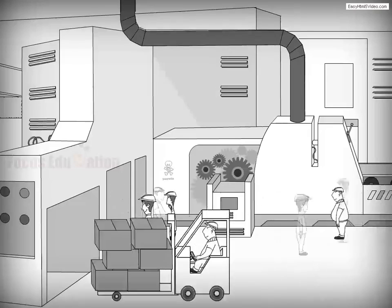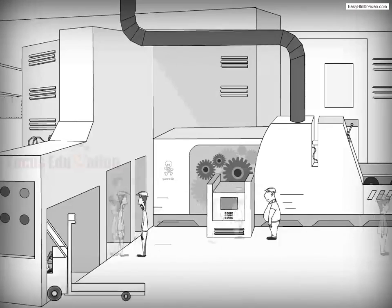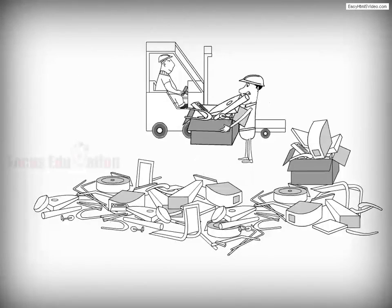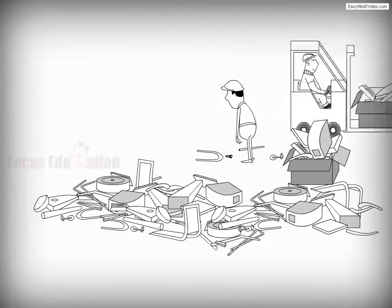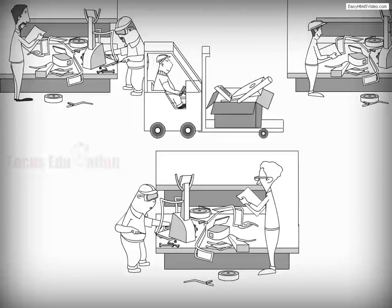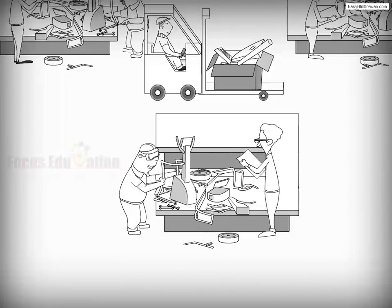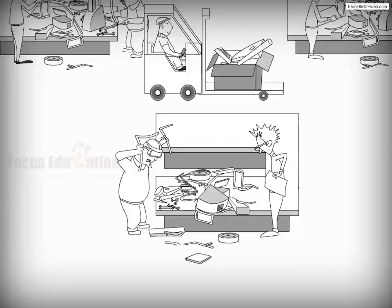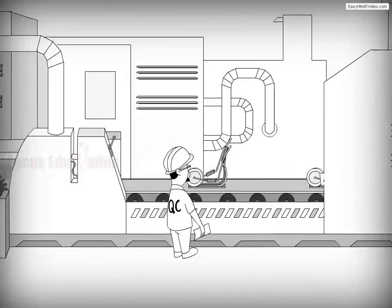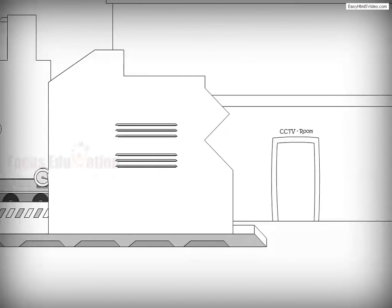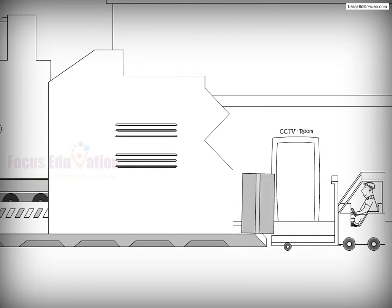Next, they move raw materials to the machining department, where some parts for the units are fabricated. Then they transfer the fabricated parts to the assembly department, where direct laborers assemble the units with engineers supervising the process. At this stage, the units are inspected. Upon passing inspection, each unit is packaged and moved to the finished goods warehouse, where they await shipment to customers.